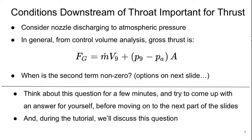The conditions downstream of the throat are important for the generation of thrust. If we consider our nozzle discharging to atmospheric pressure, from control volume analysis we know that the gross thrust is m-dot times V9, which is our exit velocity, plus the difference between the exit pressure and the atmospheric pressure times the nozzle exit area. So when is the second term non-zero?